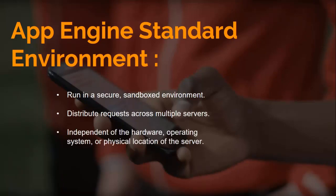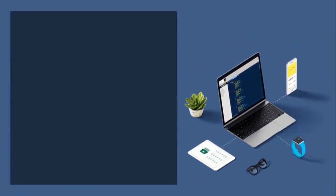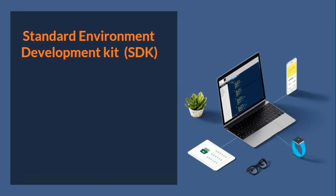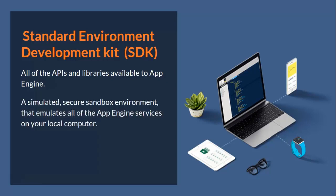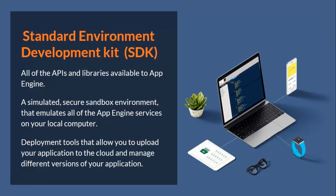Your application runs within its own secure, reliable environment that is independent of the hardware, operating systems, or physical location of the servers. Software Development Kits (SDKs) for App Engine are available in all supported languages. Each SDK includes all the APIs and libraries available to App Engine, plus a simulated secure sandbox environment that emulates all App Engine services on your local computer, and deployment tools that allow you to upload your application to the cloud.